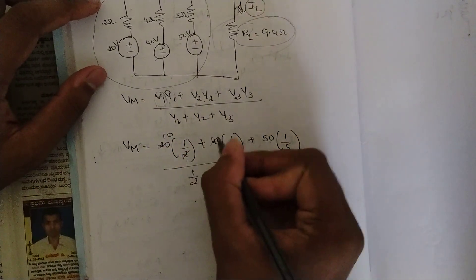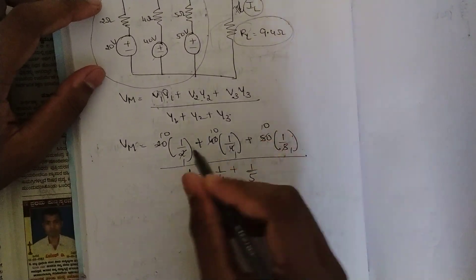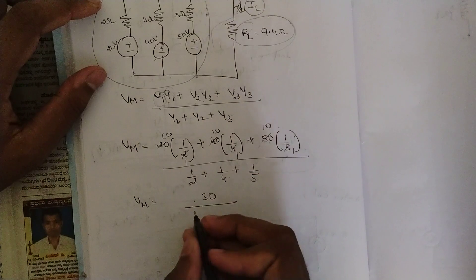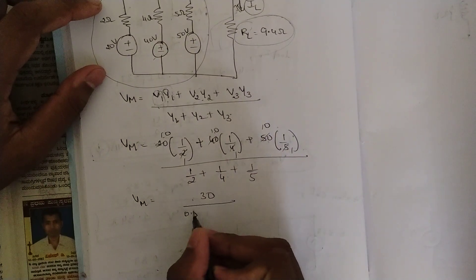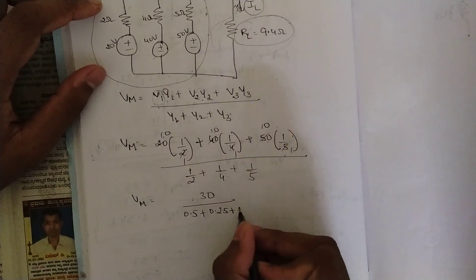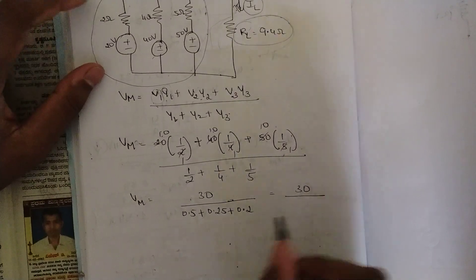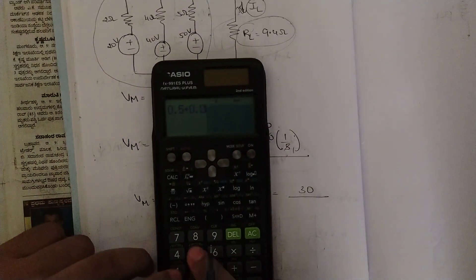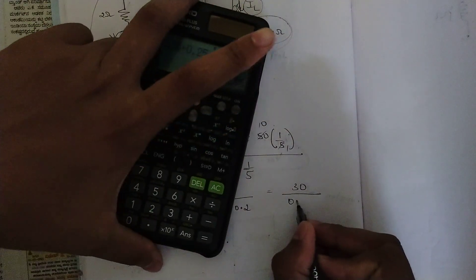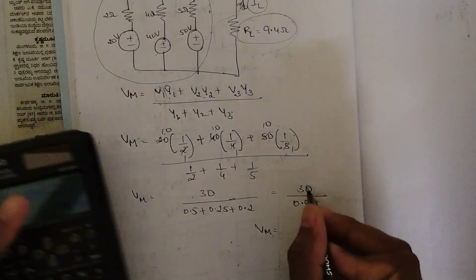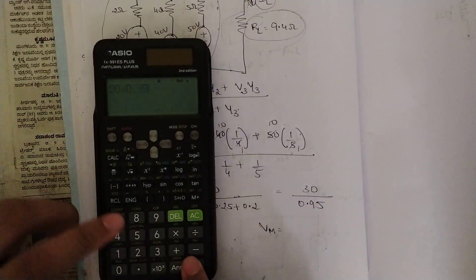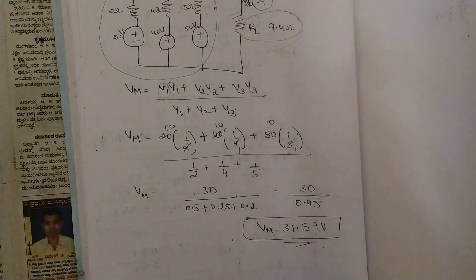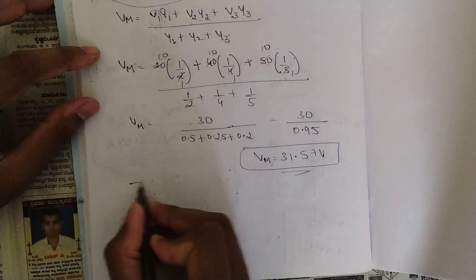Solving the numerator: 20×(1/2) = 10, 40×(1/4) = 10, 50×(1/5) = 10, giving 10 + 10 + 10 = 30. For the denominator: 1/2 = 0.5, 1/4 = 0.25, 1/5 = 0.2, summing to 0.95. So VM = 30 / 0.95 = 31.57 volts. This is our Millman voltage.